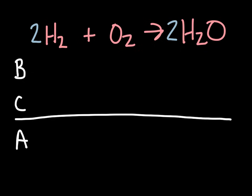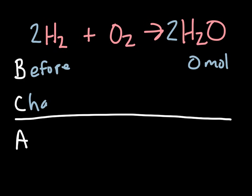This is what our BCA table is going to look like. We're going to always start out with a balanced chemical equation written right up above. Underneath we have B which stands for before, C which is change, and A which is after. Before is before the reaction takes place. An easy thing to fill in on the before row is that products are always going to be zero moles — we only put moles in a BCA table. The change is how many moles they changed by as the reaction took place, and once we find out how one of these changes, we can figure out how each other one changes based on the coefficients in the balanced chemical equation.